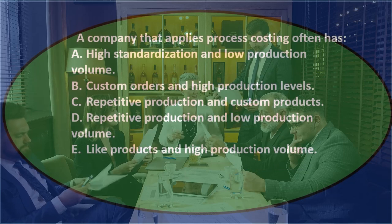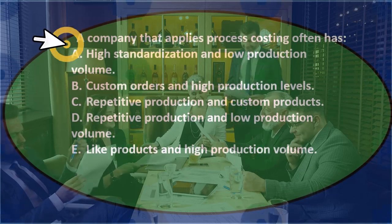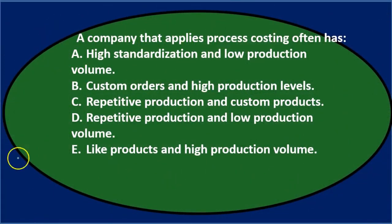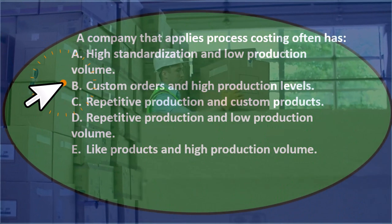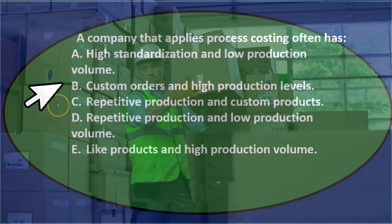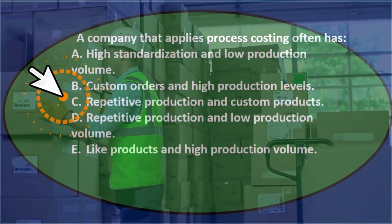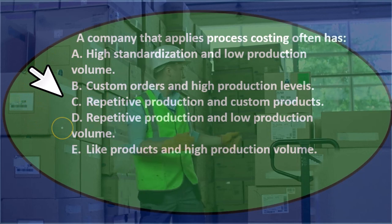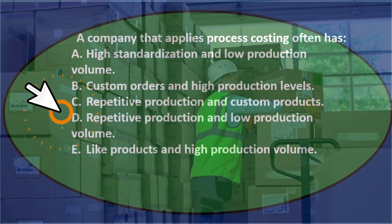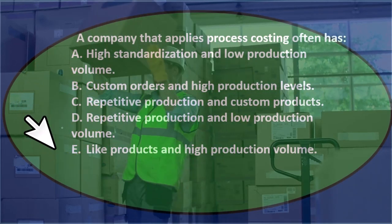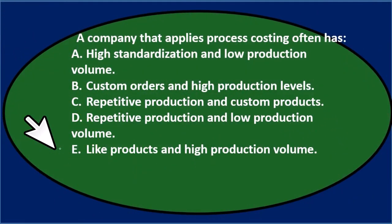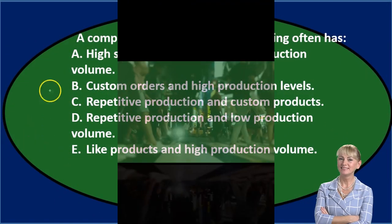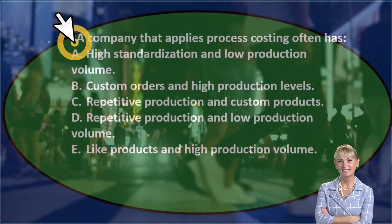Next question: a company that applies process costing often has — A) high standardization and low production volume, B) custom orders and high production volume, C) repetitive production and custom products, D) repetitive production and low production volume, or E) like products and high production volume. Let's use process of elimination again.